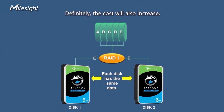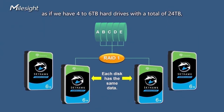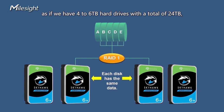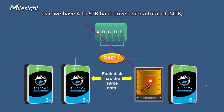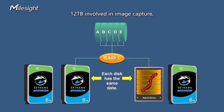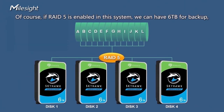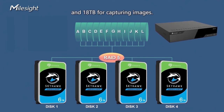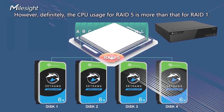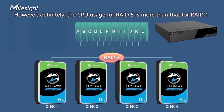The cost will increase accordingly. With four 6 TB hard drives totaling 24 terabytes under RAID 1, 12 terabytes are used for image capture and 12 terabytes mirror that data. If RAID 5 is enabled instead, 6 terabytes are used for backup and 18 terabytes are available for capturing images. However, CPU usage for RAID 5 is higher than for RAID 1.